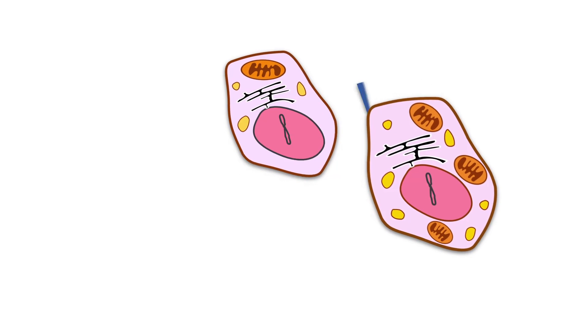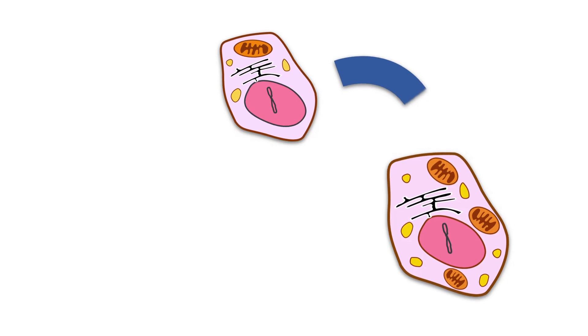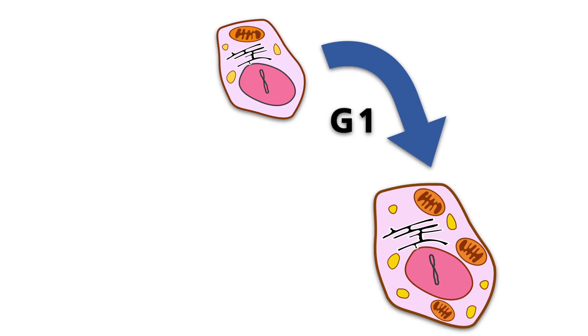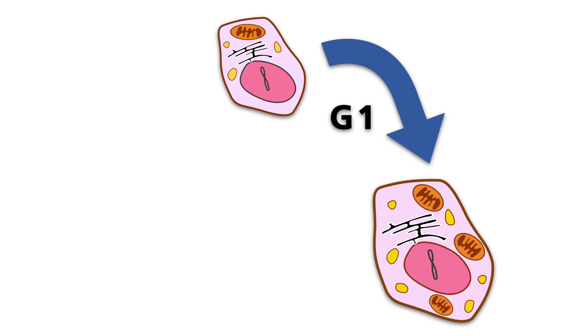Immediately following cell division, the new cell starts to grow and to produce proteins, intracellular membranes, and organelles. This first stage is called the G1 phase, for GAP1,